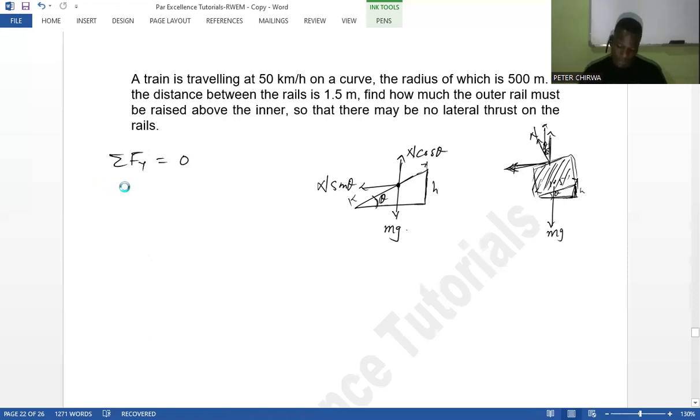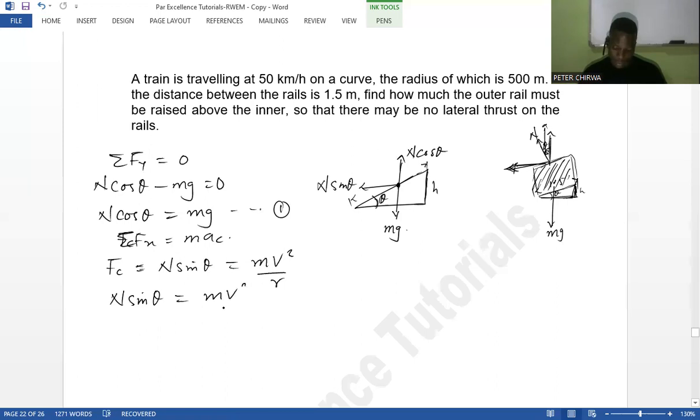All right, so we're going to have the normal force component in y minus mg equal to zero. So N cos theta equals mg, and that will be my equation one. The centripetal force in the x, we know that is the centripetal force which is going to be N sin theta equals mv squared over r. So N sin theta equals mv squared over r, and that is my equation two.